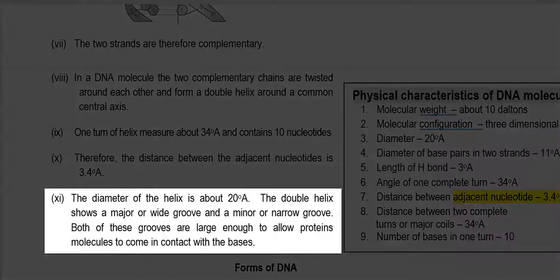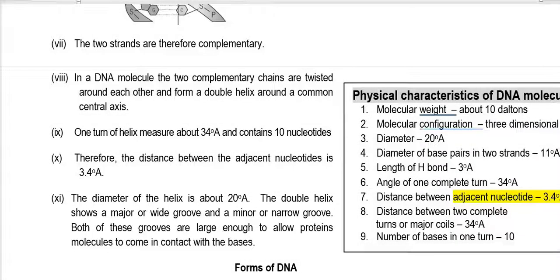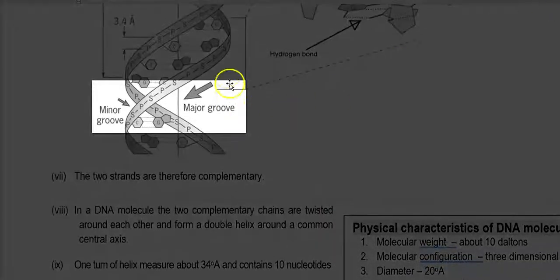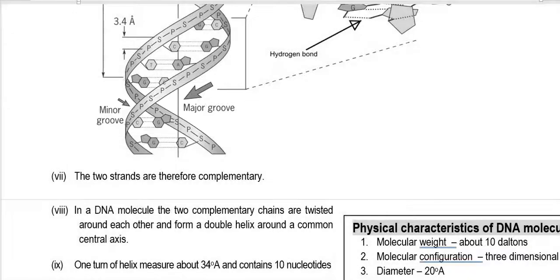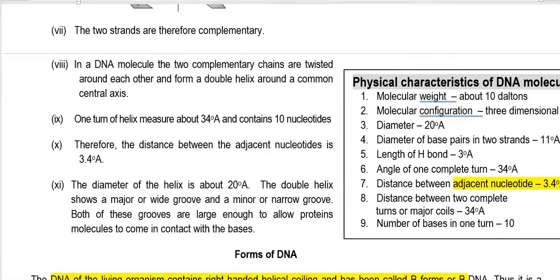The diameter of the helix is about 20 Angstroms. The double helix shows two different kinds of grooves, referred to as the major groove and the minor groove. Both these grooves are large enough to allow certain proteins or enzymes to fit in, and they are involved in the processes of replication and transcription.